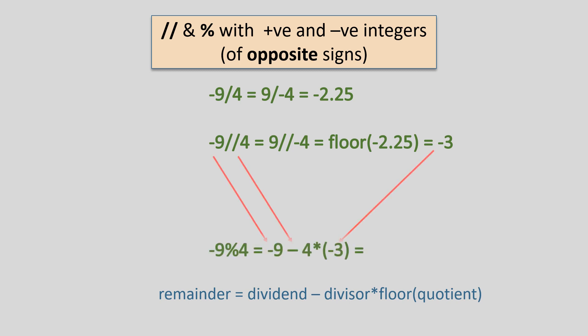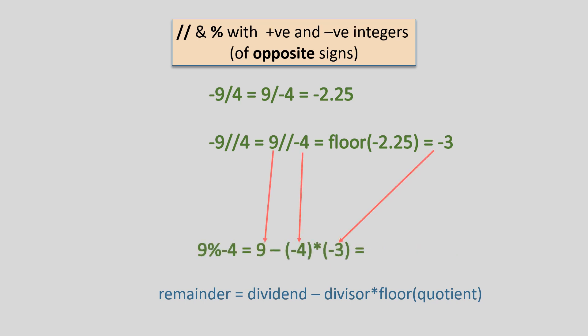So, minus 9 modulo 4 returns minus 9 minus 4 times minus 3, which equals 3. This way, minus 9 modulo 4 is 3. In the same way, 9 modulo minus 4 returns 9 minus minus 4 times minus 3, which equals minus 3. So, 9 modulo minus 4 is minus 3.